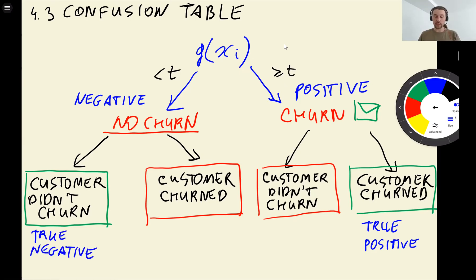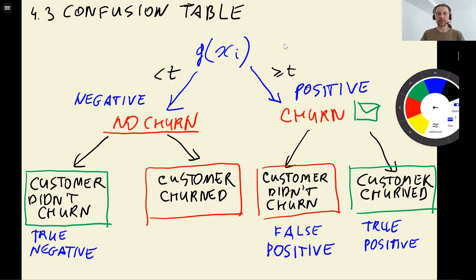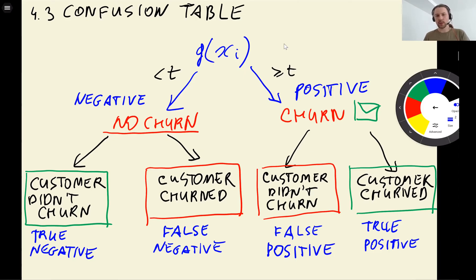The two incorrect decisions both start with 'false.' False positive is when we predict this instance belongs to the positive class but it's not correct — we think the customer is churning, send them an email, but they are not churning and just use the discount. False negative is the opposite: we think the person is safe and not going to churn, but they decide to leave anyway, so we falsely predicted this customer as a non-churning one.